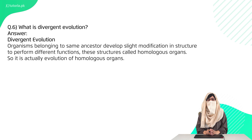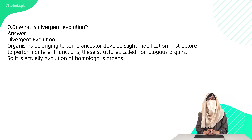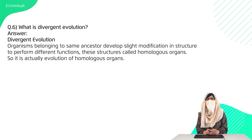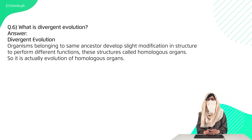Question 6 is: what is divergent evolution? Divergent evolution means that organisms developed from one common ancestor, but because they grow in different environments and face different challenges, they modify their bodies according to their specific environment. This is divergent evolution.